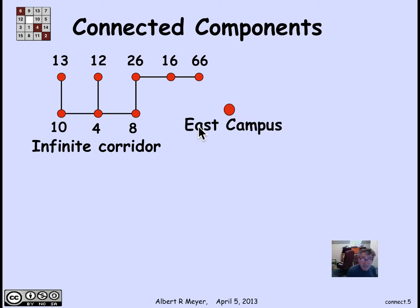East Campus, of course, isn't connected to anything, so it's a single isolated vertex. And then there's the Medical Center in E17 and E25, which are a sequence of four buildings that are connected as indicated, but not connected at all to East Campus or the Infinite Corridor.